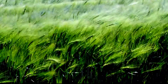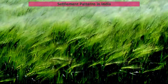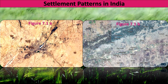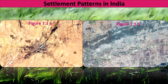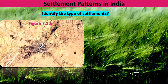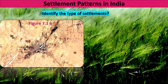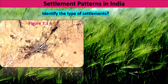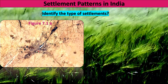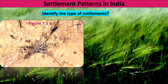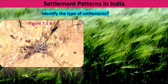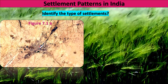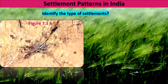Moving to page 46, the first question asks us to identify the type of settlements. In figure 7.1a, this type of settlement is a nucleated settlement. It appears to be around a river or a dam, and we see many houses grouped together. Since it is an aerial view, the figure may not be very clearly shown in the textbook, but these are the houses, and this settlement is called a nucleated or compact settlement.